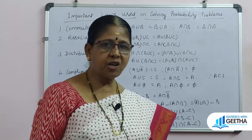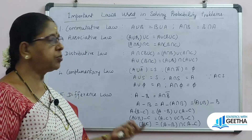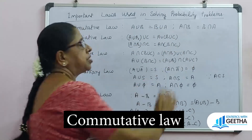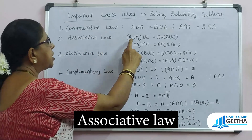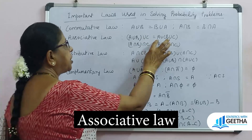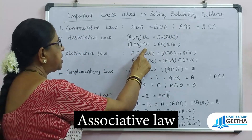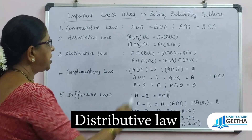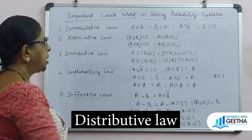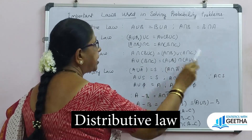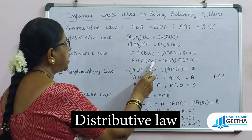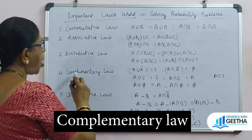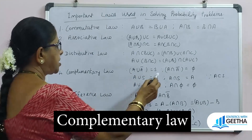Now the important laws we use in probability problems. First, the commutative law: A union B equals B union A; similarly A intersection B equals B intersection A. Associative law: A union (B union C) equals (A union B) union C; A intersection (B intersection C) equals (A intersection B) intersection C. Distributive law: A intersection (B union C) equals (A intersection B) union (A intersection C); similarly A union (B intersection C) equals (A union B) intersection (A union C).